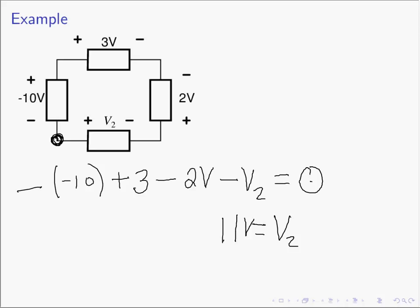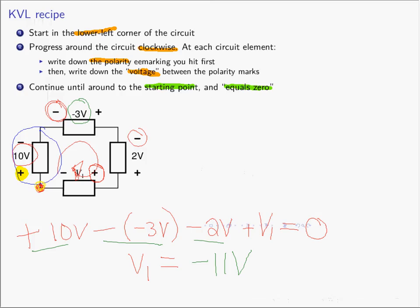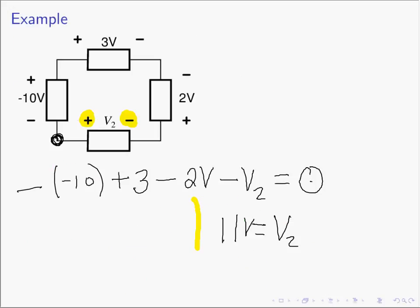And if you look at this problem, we see that V2 is the voltage plus to minus with the plus on the left. Go back and look at the previous page, and we see that V1 is the same voltage with the plus on the right-hand side. In the first example, V1 is negative 11 volts. When we work this one, we see V2 is a positive 11 volts.